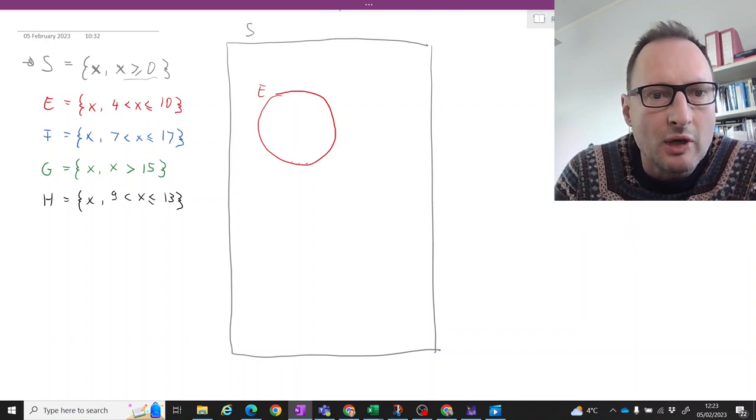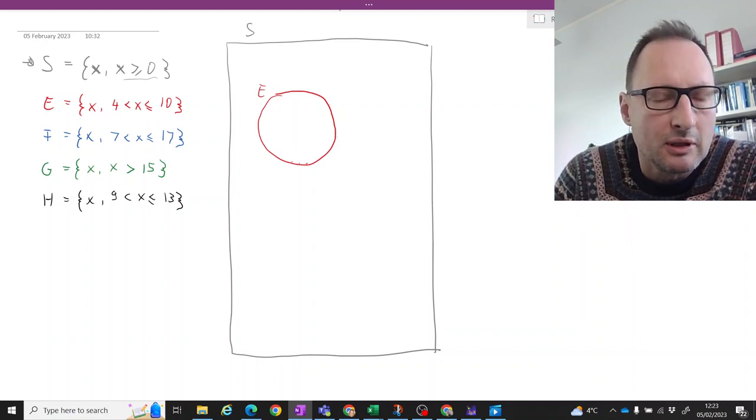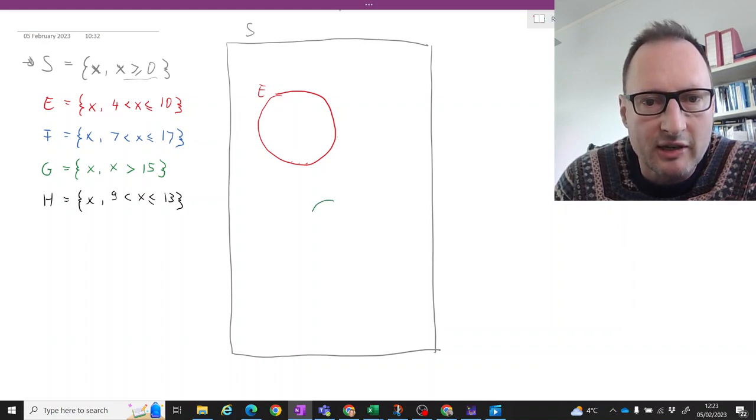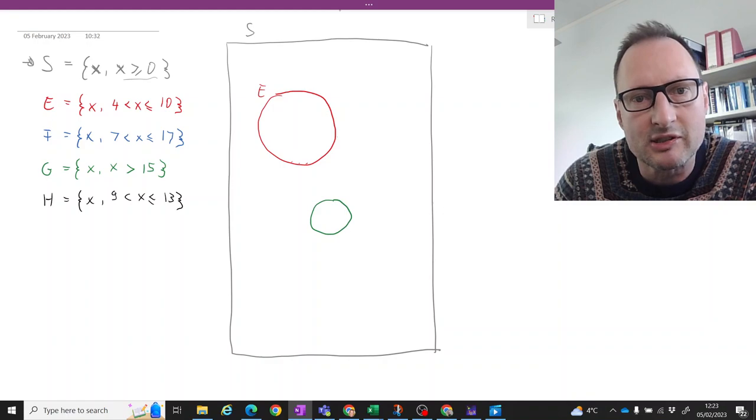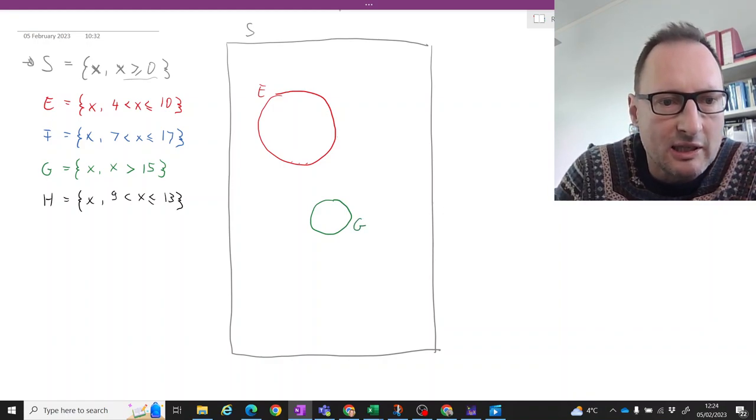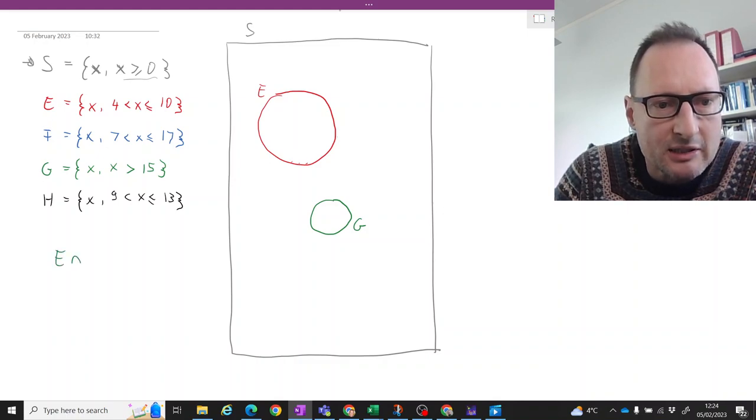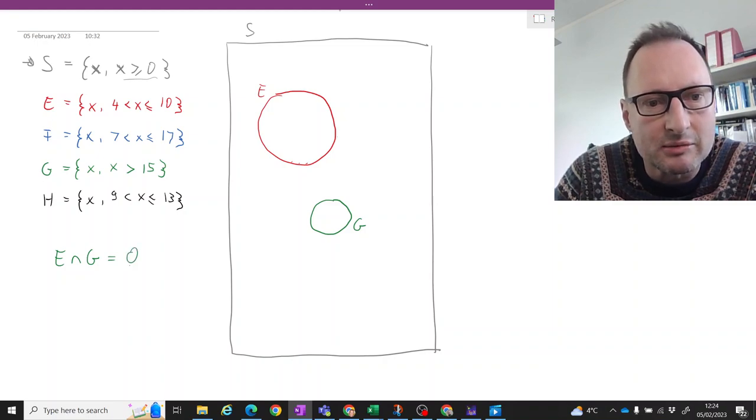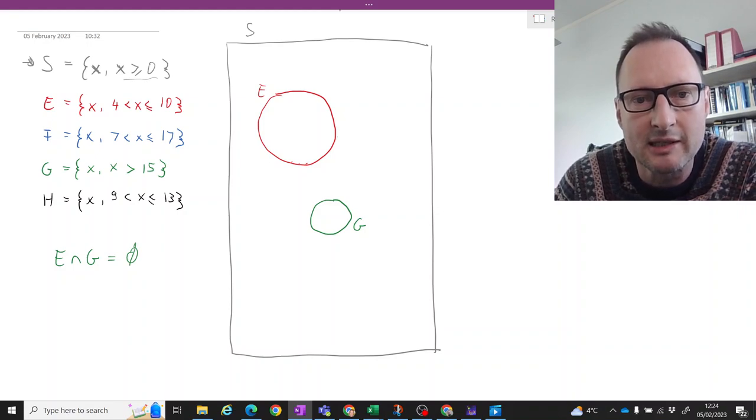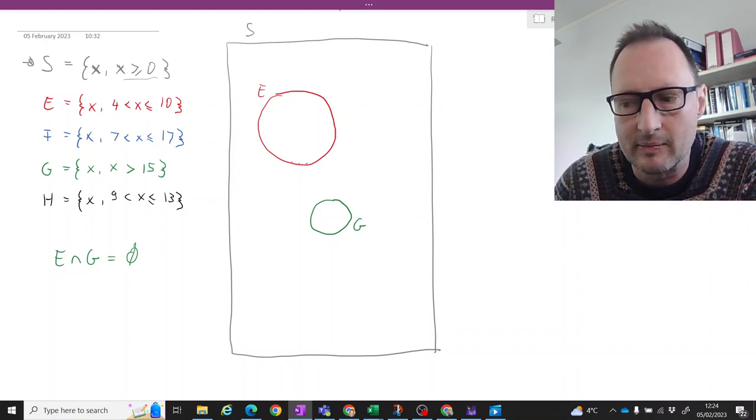So these two have no common values. Okay, so if you wanted to draw G, we would have to draw G somewhere, let's say here. And here you can see that the intersection between E and G is equal to the null set. We sometimes indicate that here because there is no intersection.